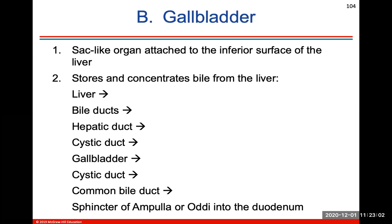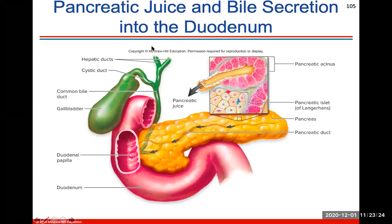The gallbladder is a sac-like organ attached to the inferior surface of the liver. It stores and concentrates bile from the liver. Bile travels through the bile ducts into the hepatic duct, into the cystic duct, into the gallbladder. Then from the gallbladder, bile travels through the cystic duct, through the common bile duct, into the duodenum. Knowing the anatomy of the liver and gallbladder and the names of all these ducts is important.